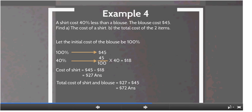So the cost of a shirt is 40% less than a blouse, which means that it is $45 minus $18, which is equal to $27. And the shirt costs $27.